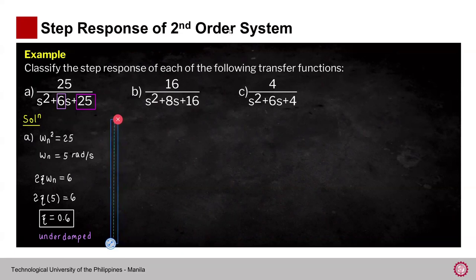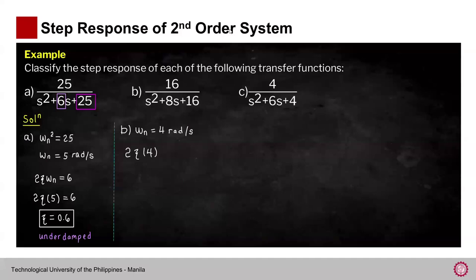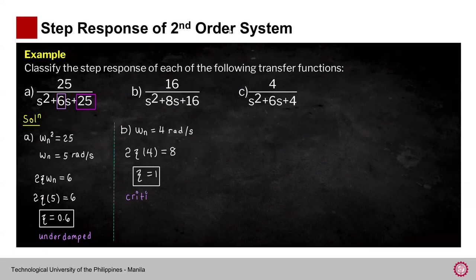For part (b), denominator s² + 8s + 16: ω_n = √16 = 4 rad/s; 2ζ(4) = 8, so ζ = 1. Since ζ = 1, this system is critically damped.